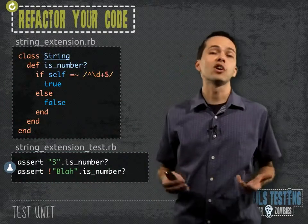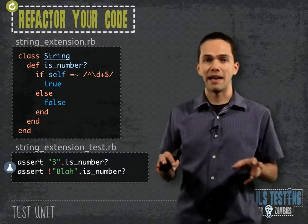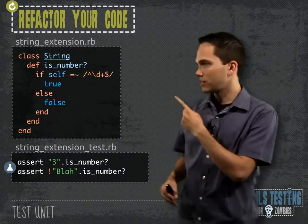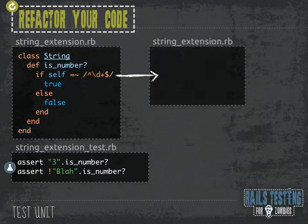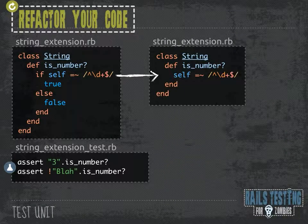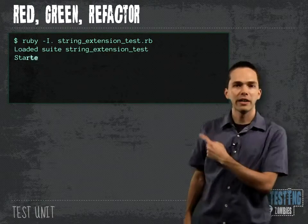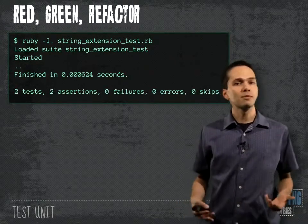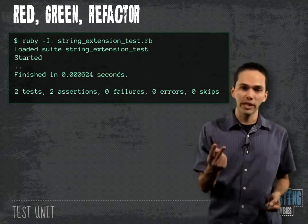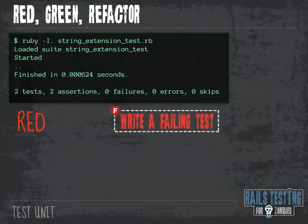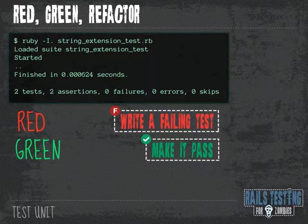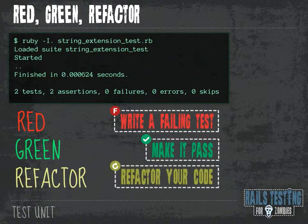That's the second step when we do test first development. Our last step is to refactor our code now that we have passing tests. We can simplify the method to a single conditional since it returns true or false. We refactor it, run our tests, and they all still pass. When we talk about test first development, we say red, green, refactor: red meaning write a test that fails, green meaning write enough code to make those tests pass, and then refactor — reflect back on our code and see if we can improve it.